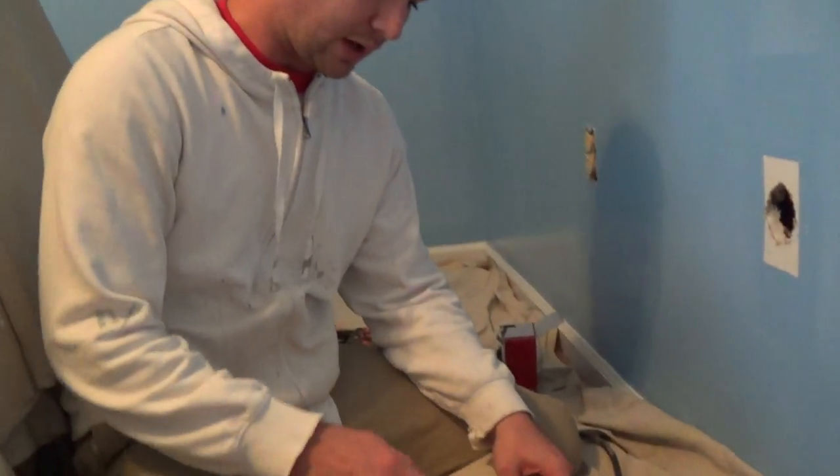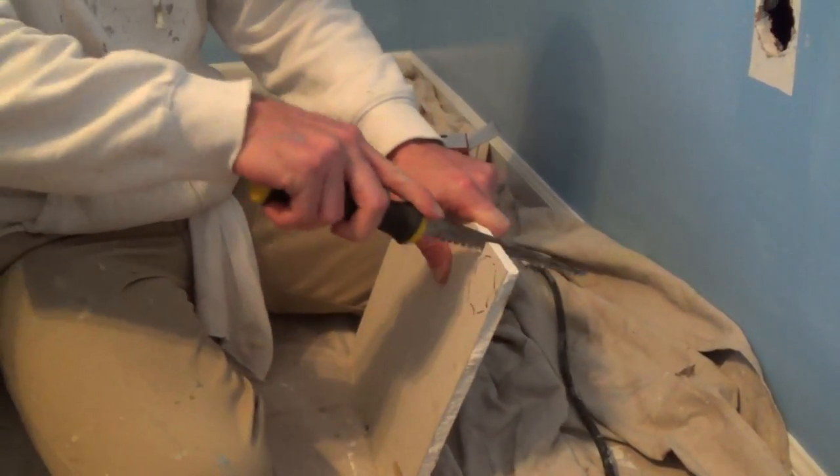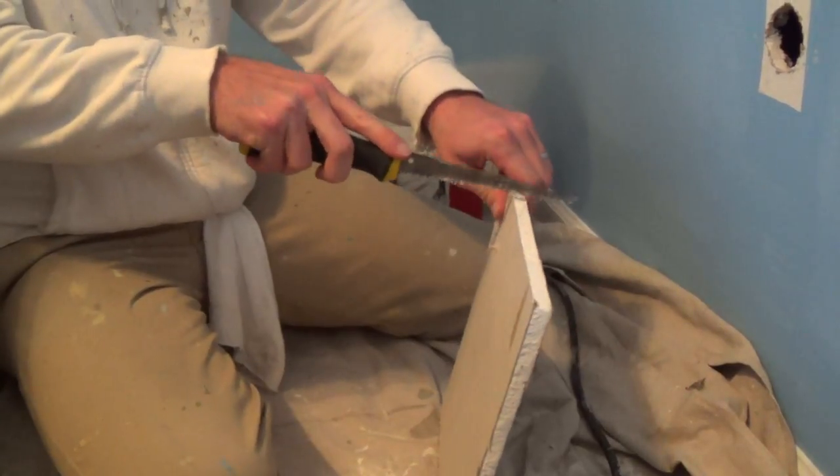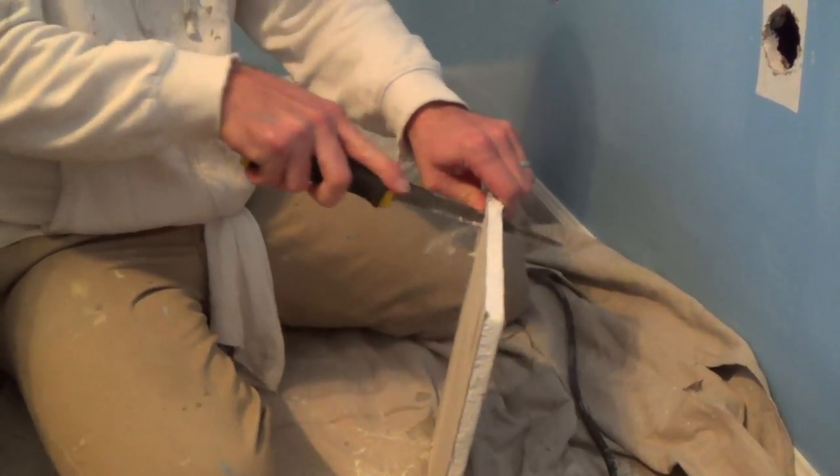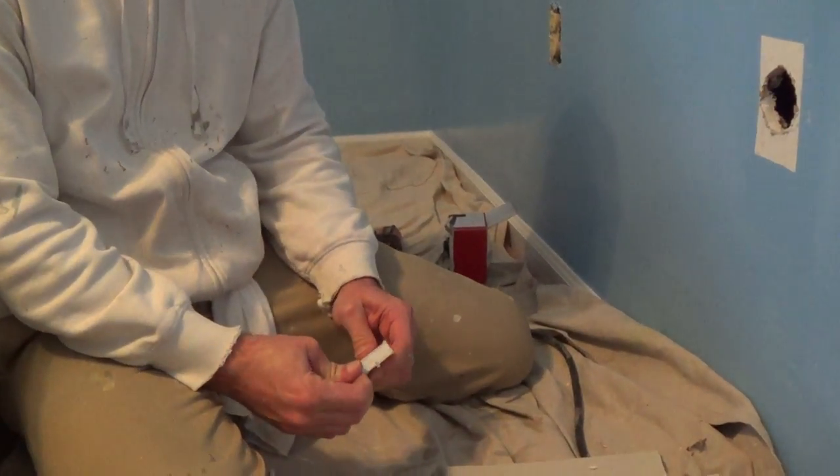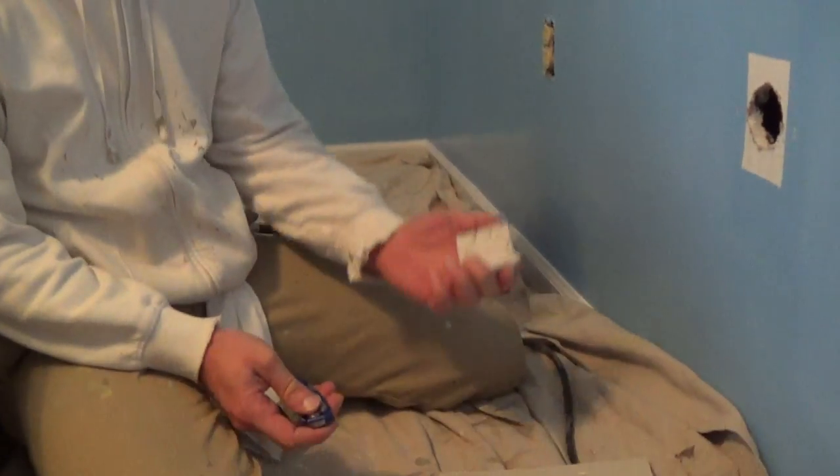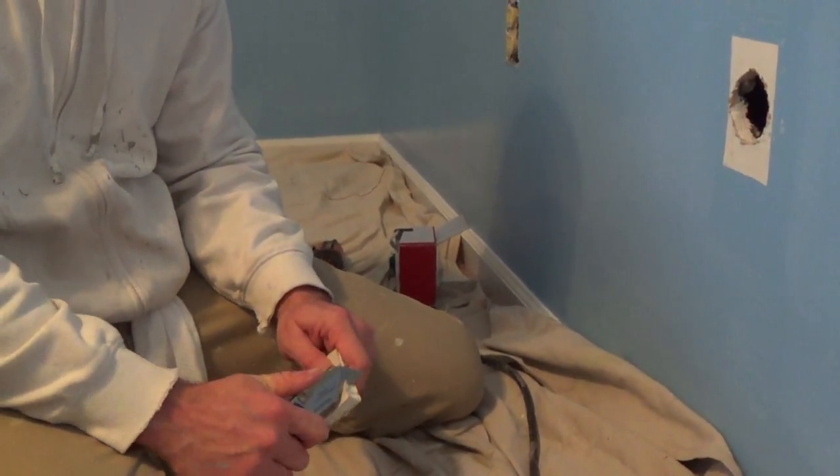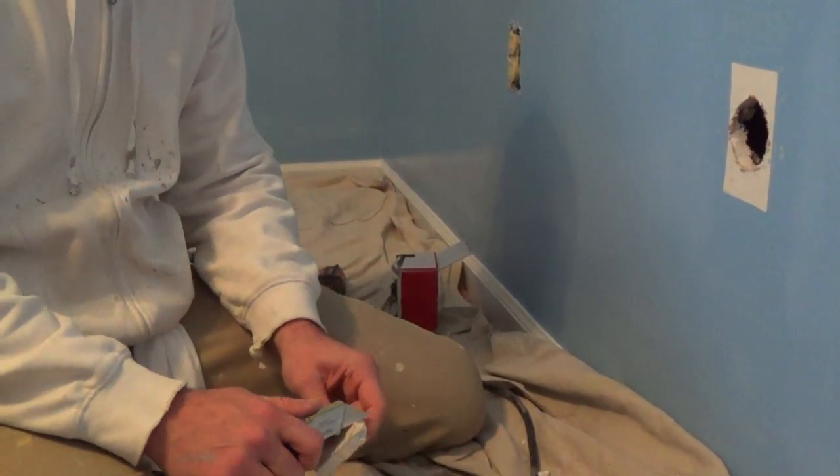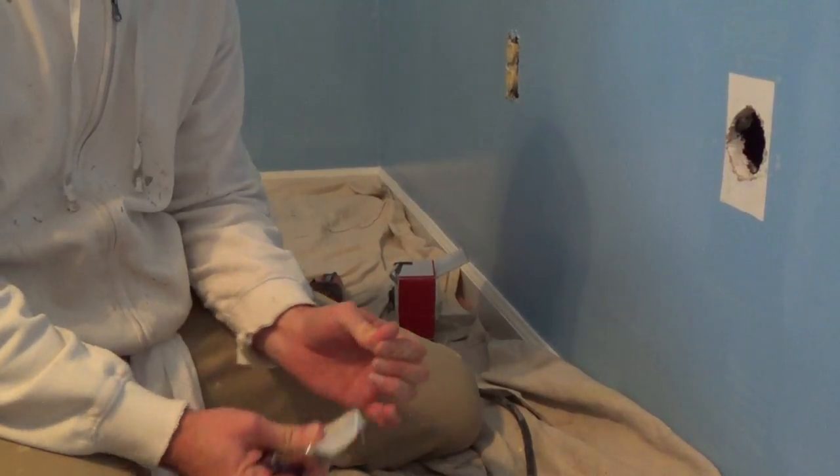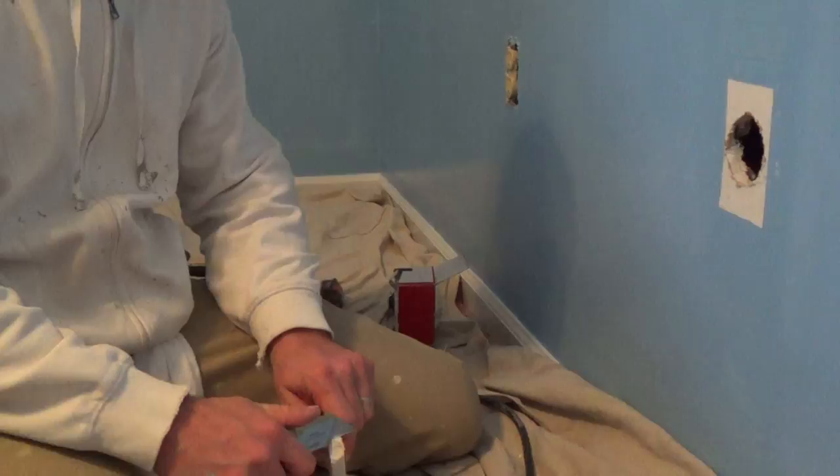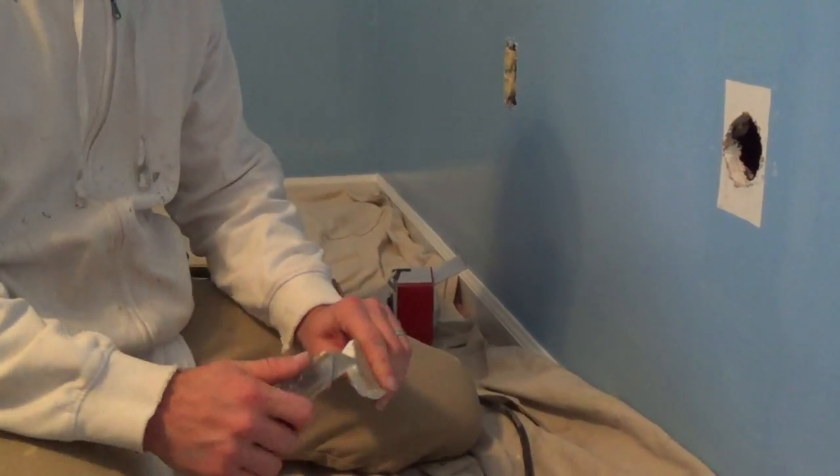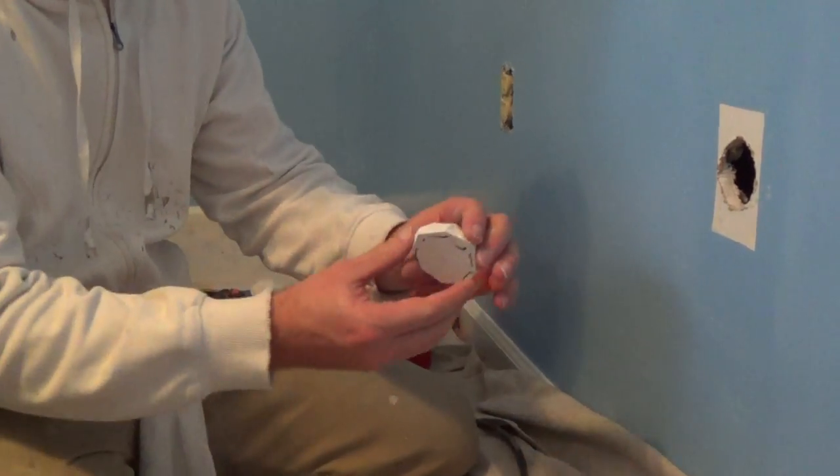Where's my drywall saw? Now we'll take our drywall saw and we'll cut this guy out. You're going to get a lot of dust, so make sure you keep a drop cloth down or plastic. And these drywall saws can be sharp. Don't cut your hand off. Now it's clearly not a circle. We need to shave it off a little bit.